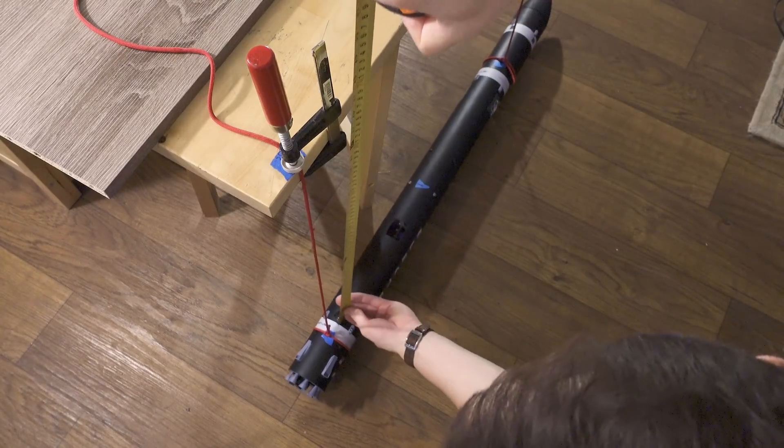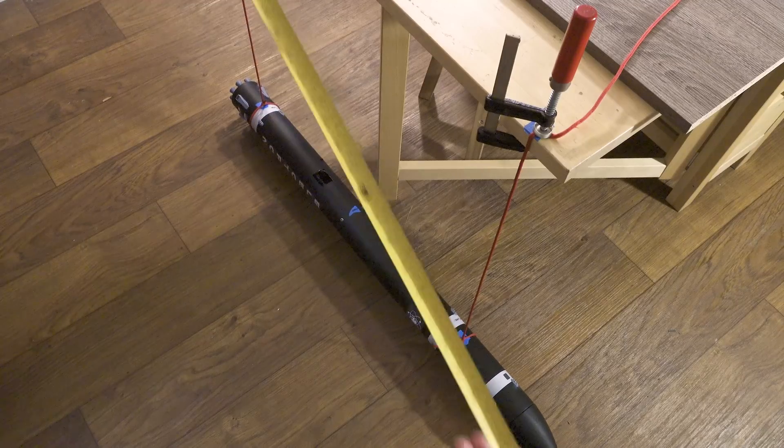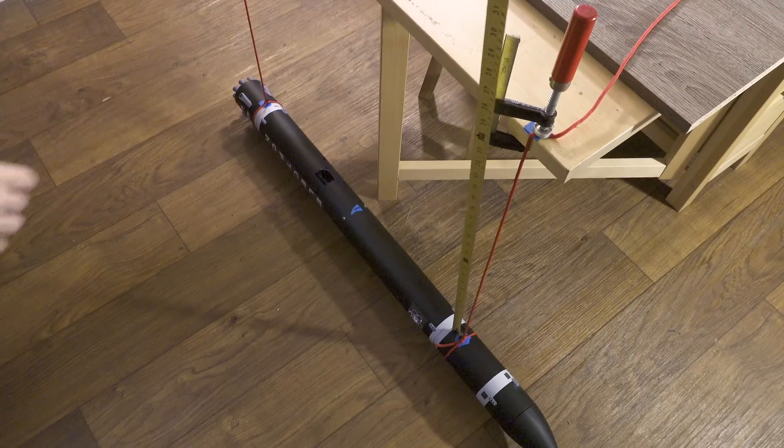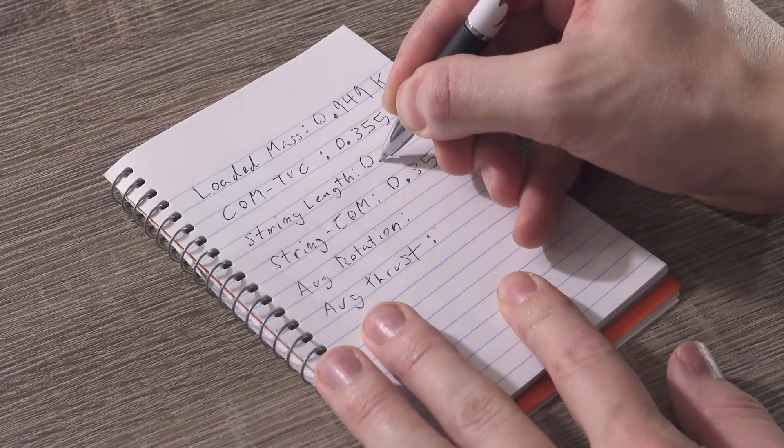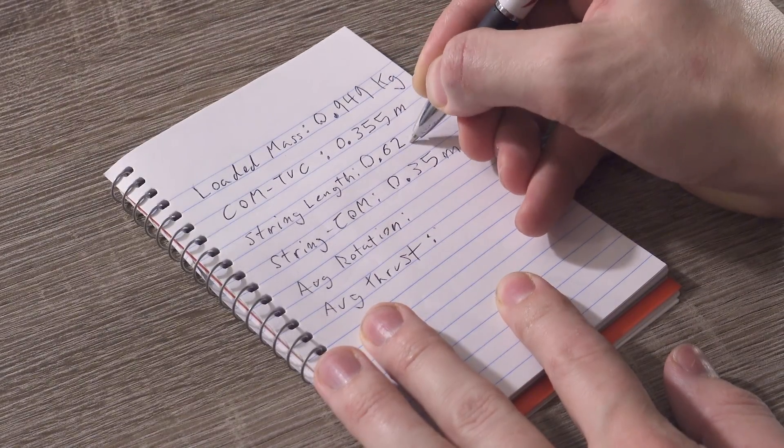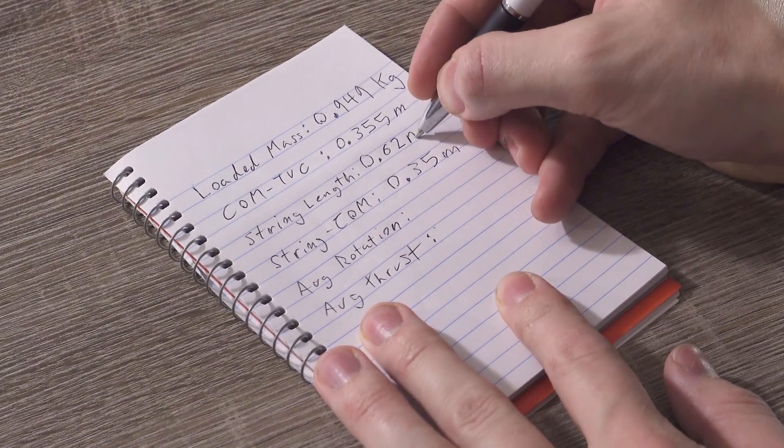Now we're going to measure the distance of these strings from the top of the rocket body to the point where it's clamped. If they're a little bit different by a centimeter or so, that's okay. We'll write this length down in meters as the string length. I measured about 62 centimeters, so I'll write 0.62 meters.